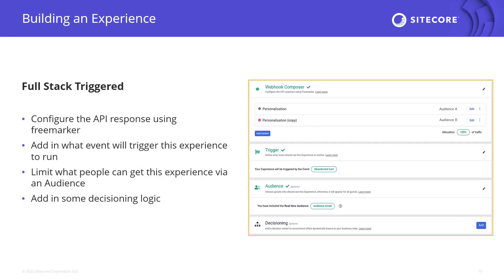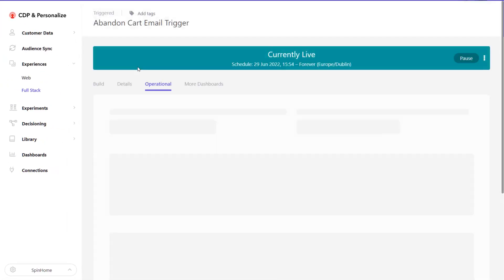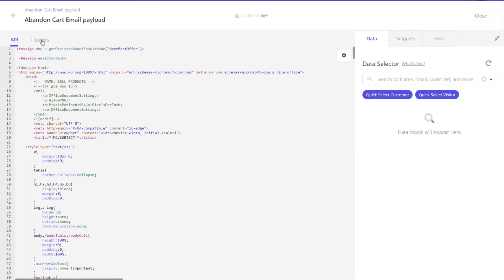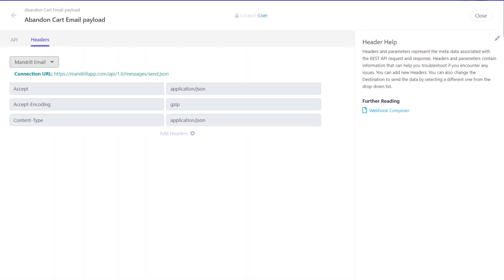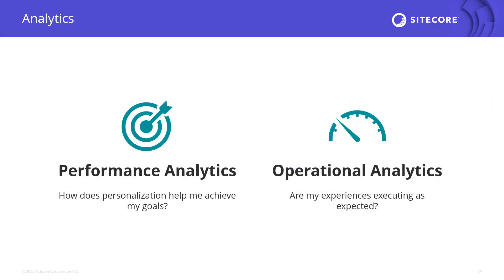Last but not least, this is the triggered experience UI. The idea behind triggered experiences is sending content somewhere when a specific event triggers. You start by creating webhooks, which are API responses to a connection you choose to send the output to. For example, when configuring the abandoned cart email, you need to choose an email service provider as the webhook destination to distribute the email message.